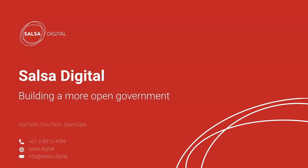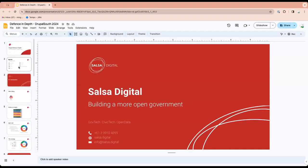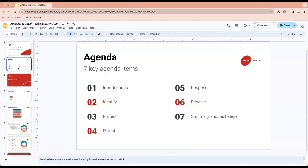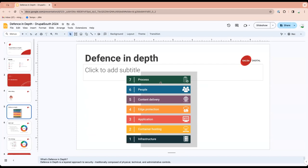Damian has a question: he was wondering about the first slide with about nine points and whether there was a significance to the order. The order goes from foundation and builds up — compute infrastructure at the base, then container hosting like Kubernetes, then the Drupal application, then edge protection and WAF on top of that, and then the content delivery system at the top.